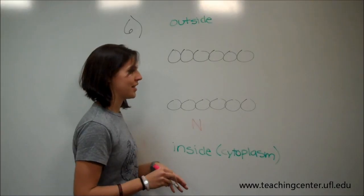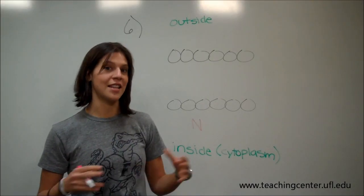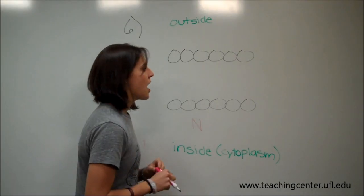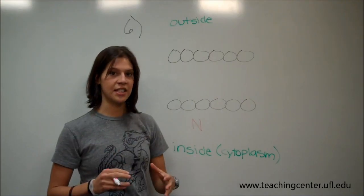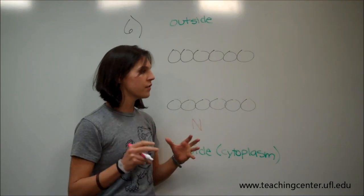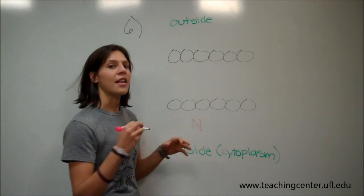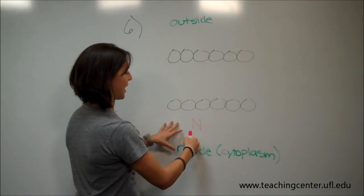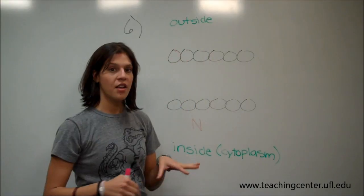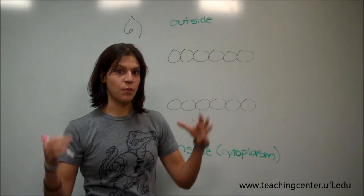And the second part of this question tells us that there's six transmembrane helices. That's what the TM stands for. And there are only small intervening sequences between these helices. Well, the small intervening sequences means that the helices barely protrude out of the membrane, whether it's on the inside or the outside of the cell. So I'm going to draw our six helices within the membrane, and this is what it looks like.